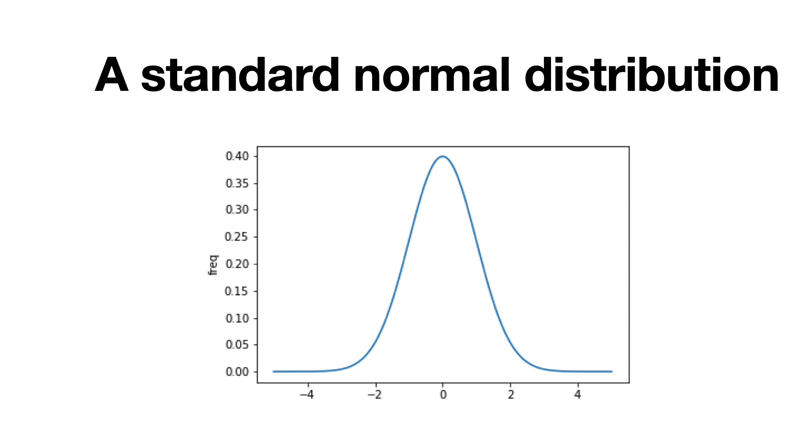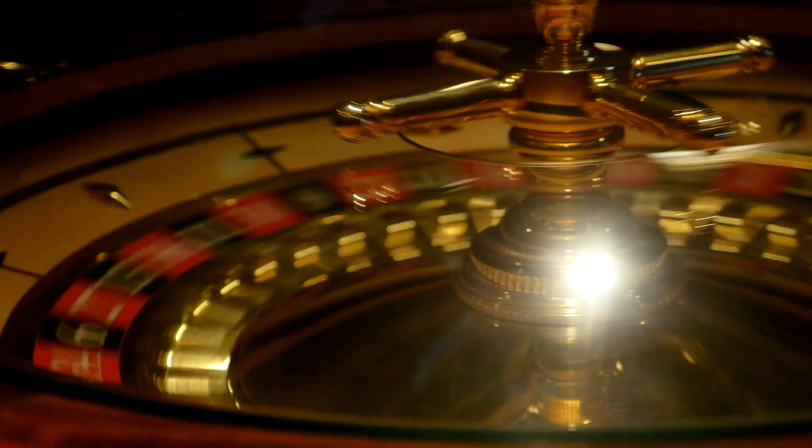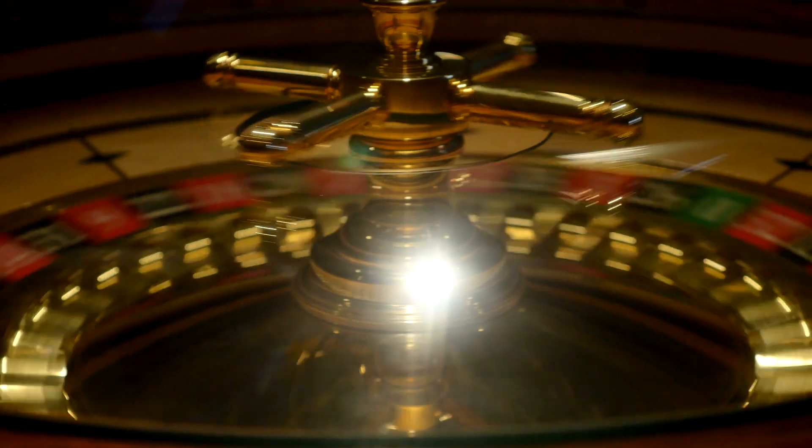If someone makes a claim about something, our aim is to develop a framework with which we can assess whether this person's claim is reasonable or not. We will imagine a person who comes up to us and claims that they have drawn a number at random from a standard normal distribution — that is, a normal distribution that has a mean of 0 and a variance of 1. The number this person claims to have drawn from this distribution is 1 billion.